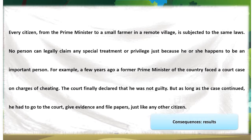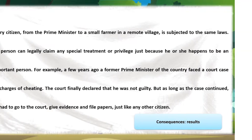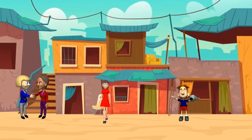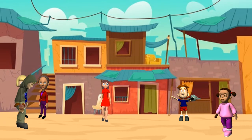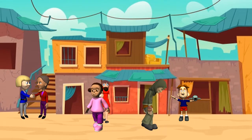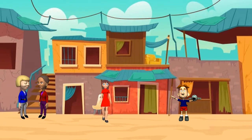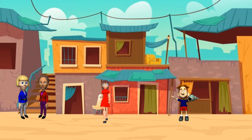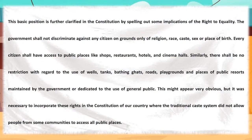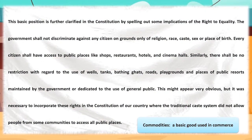Do you know a prime minister who was accused of cheating had to go through all legal procedures like any other common citizen? No privileges or special treatments were provided. Right to equality also means the government shall not discriminate on the basis of religion, race, caste, sex, or place of birth. Every person has the right to access public shops, restaurants, hotels, and cinema halls. There should be no restriction in using public commodities — parks, bathing ghats, and tanks maintained by the government should be available to all equally. In a country like India, where discrimination occurs, it was essential to incorporate these rights in the constitution.